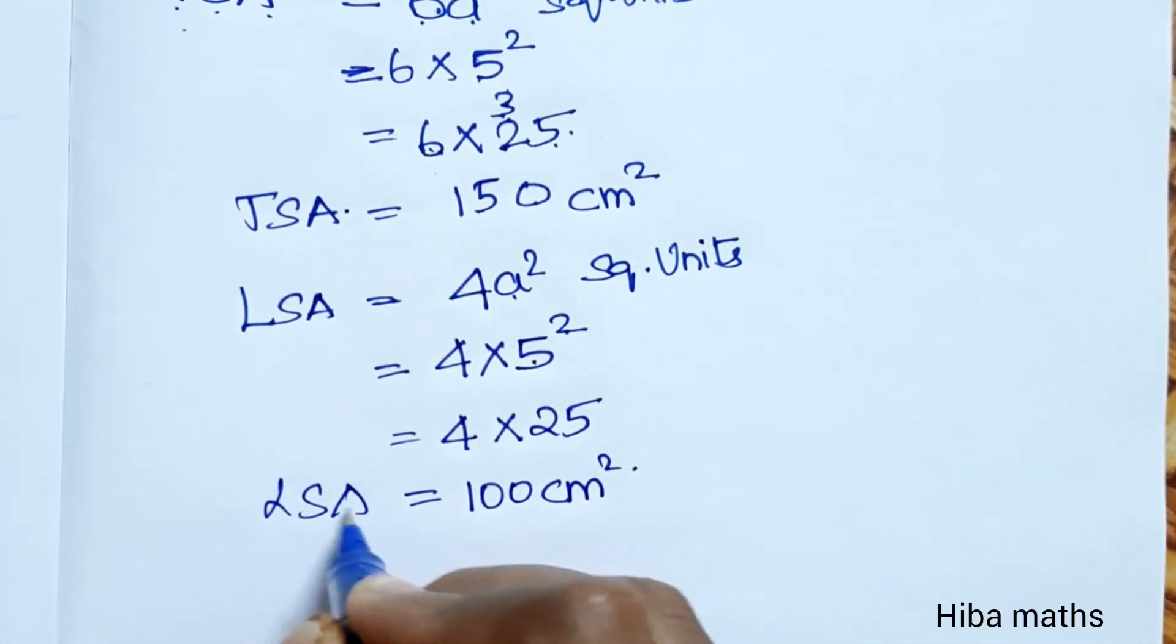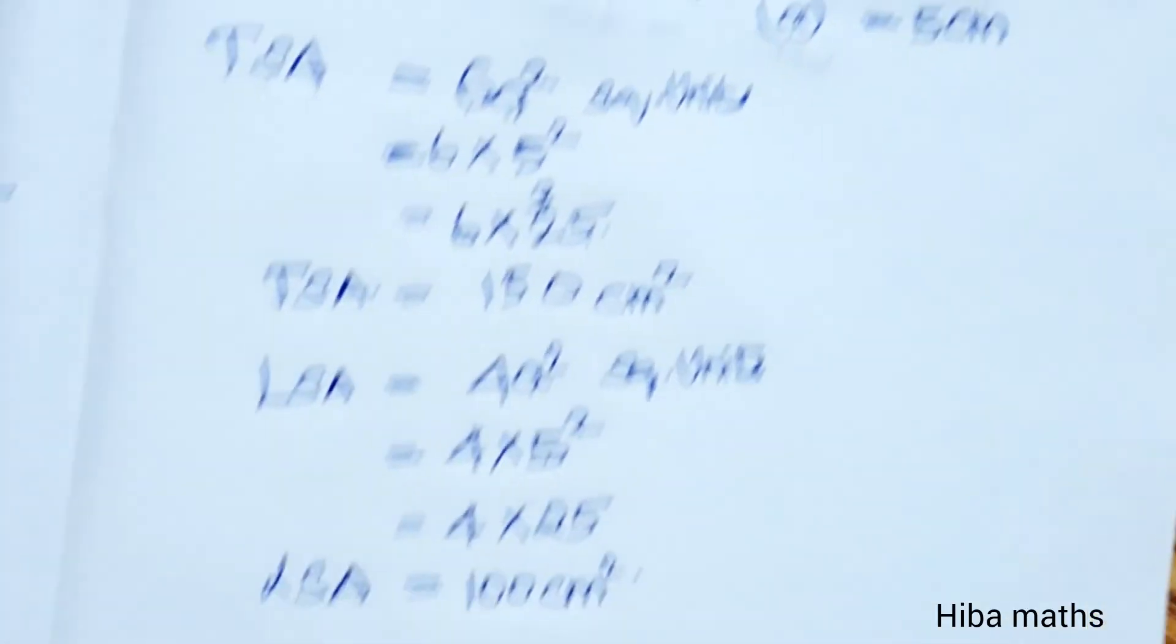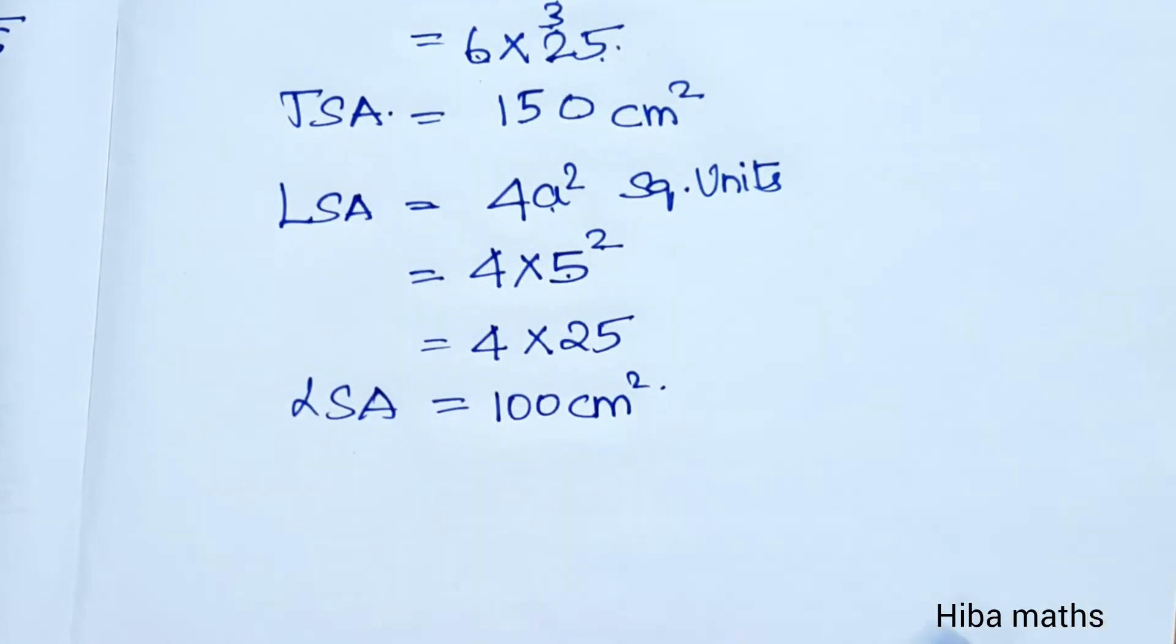This is the value of lateral surface area for the cube. To summarize, TSA is 6a² and LSA is 4a².